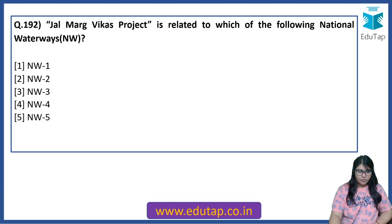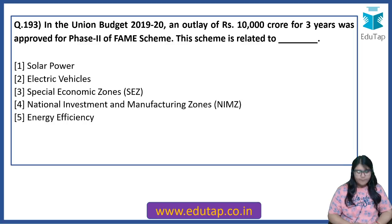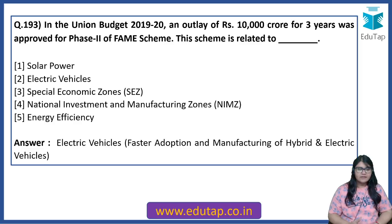Jal Marg Vikas Project is related to which of the following national waterways? The correct answer is National Waterway 1. As per the Union Budget 2019-20, an outlay of Rs. 10,000 crore for 3 years was approved for Phase 2 of the FAME Scheme — this is related to electric vehicles, specifically Faster Adoption and Manufacturing of Hybrid and Electric Vehicles.